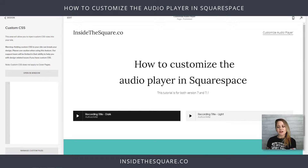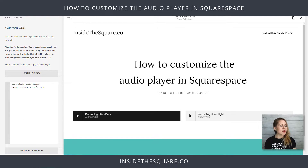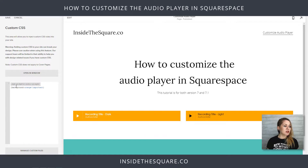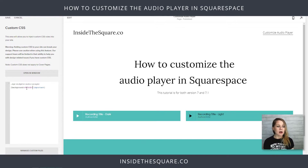The first thing I'd like to show you is how to change the background of the audio player itself. I'm going to copy the first code from the description below. This code basically says: take the SQS widget audio player and make the background of it orange. You can use a color name like the word "orange," or you can use a hex color code, or RGBA — whatever you're comfortable with.